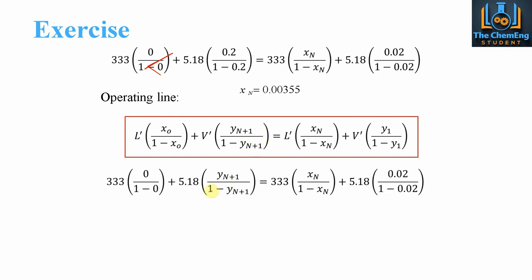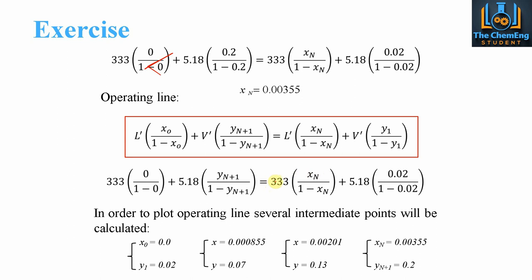So what we'll then do here is we'll substitute in except for the Yn+1 and the Xn. And then what we'll do is, in order to determine the number of theoretical stages, we have our limits. And our limits are between 0.02 in the Y and 0.2 in the Y as well.